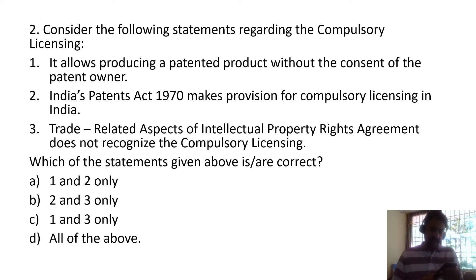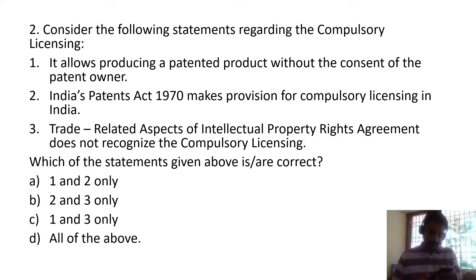Statement 2 is correct because Section 84 of the Patents Act 1970 states that at any time after the expiration of 3 years from the date of the patent, any person interested may make an application to the controller for grant of compulsory license on grounds: A - that the reasonable requirements of the public with respect to the patented invention have not been satisfied; B - that the patented invention is not available to the public at a reasonably affordable price; or C - that the patented invention is not worked in the territory of India.